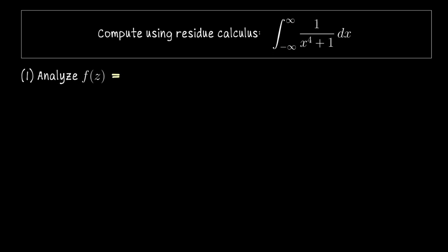Okay so first let's analyze the function f of z equals 1 over z to the 4th plus 1. Let me just point out here for a moment that the degree of the denominator is 4, which is greater than or equal to 0 plus 2, which is the degree of the numerator plus 2.